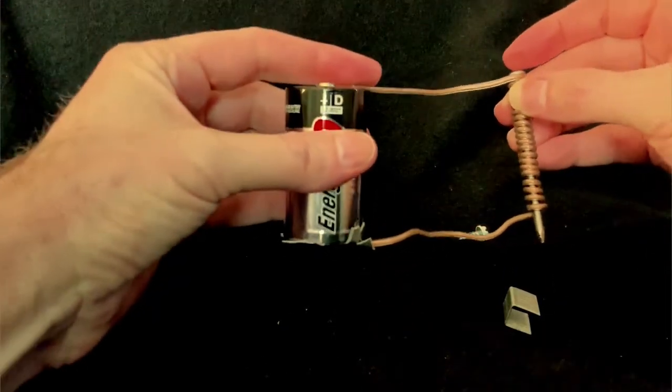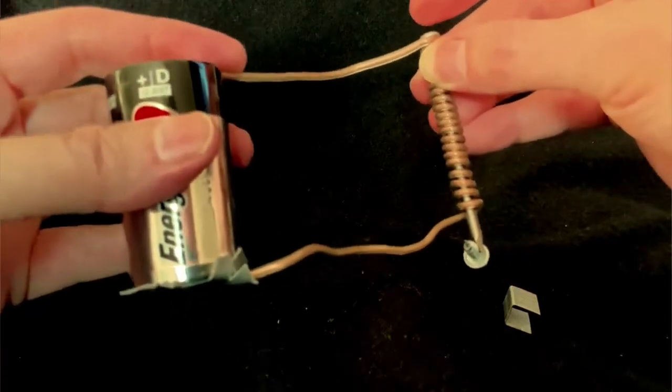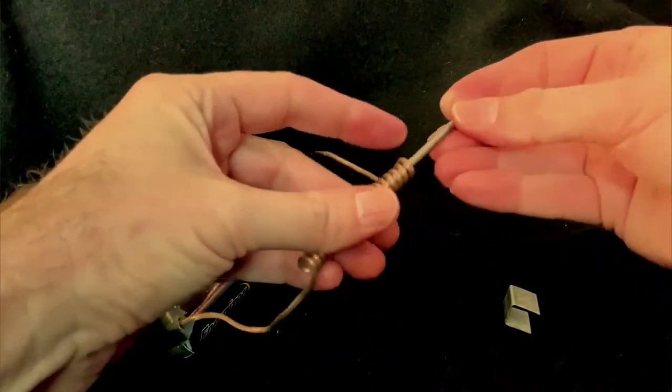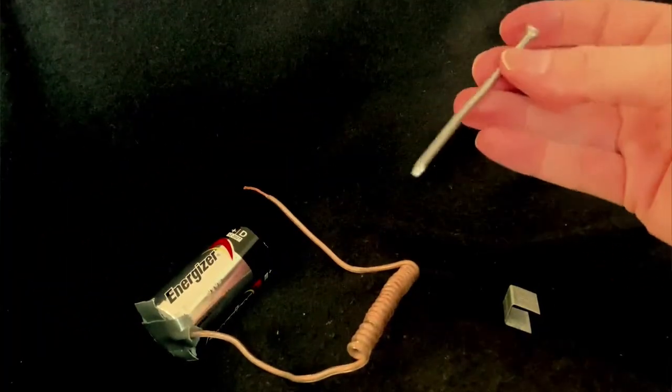But check this out. In making that electromagnet, we've induced the nail itself to become magnetic, as can be seen by its effect on a compass.